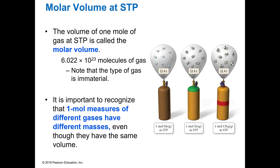It doesn't matter what kind of gas it is — they all have the same molar volume. One mole of helium at STP has a volume of 22.4 liters. A mole of xenon does, as well as a mole of methane. So any gas at STP, standard temperature and pressure, will have 22.4 liters of volume per mole. That means 6.022 times 10 to the 23rd molecules of gas, which is a mole, is also going to occupy that 22.4 liters.